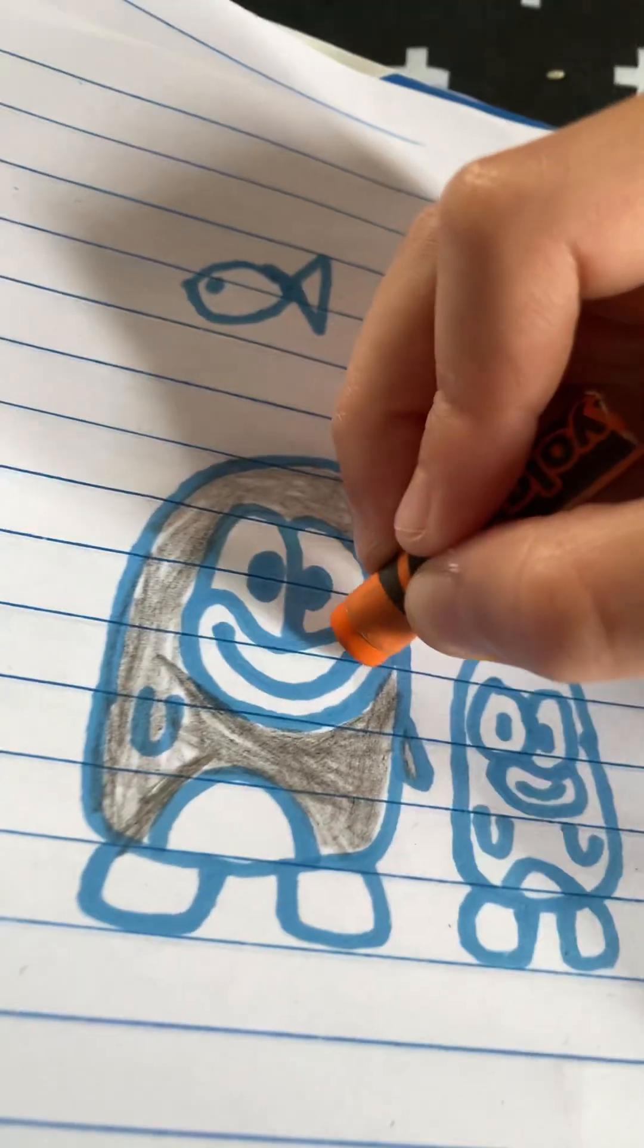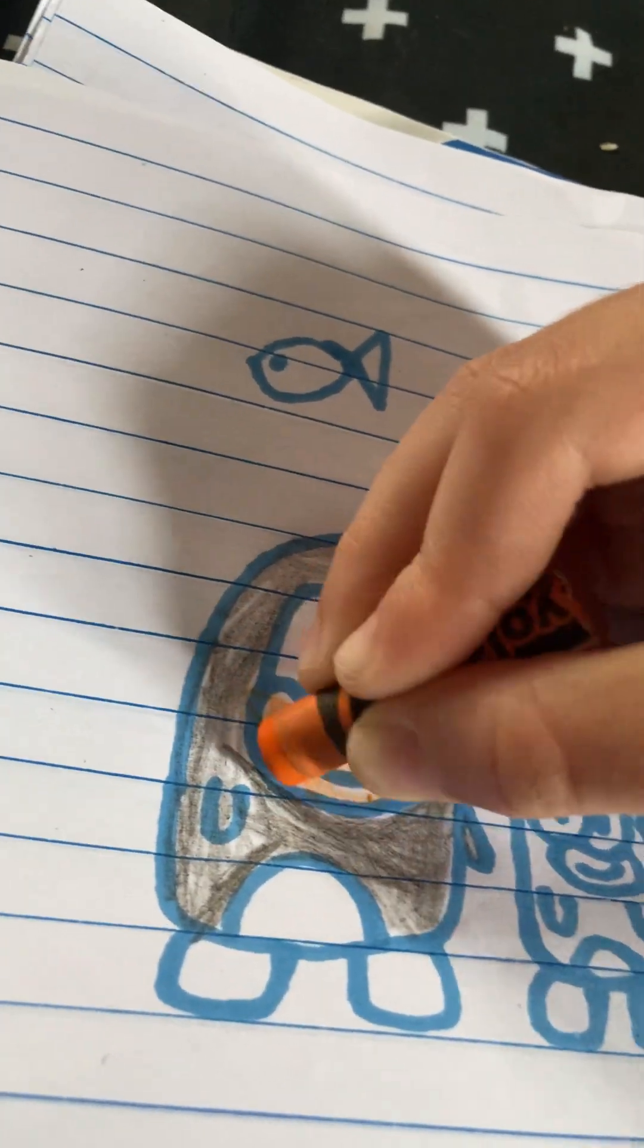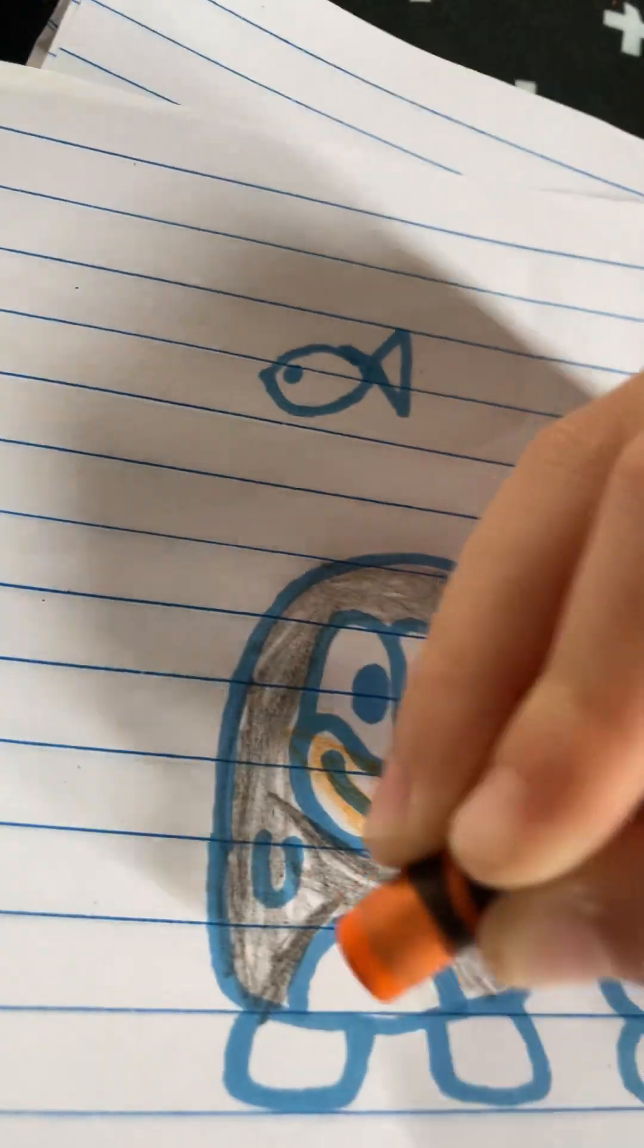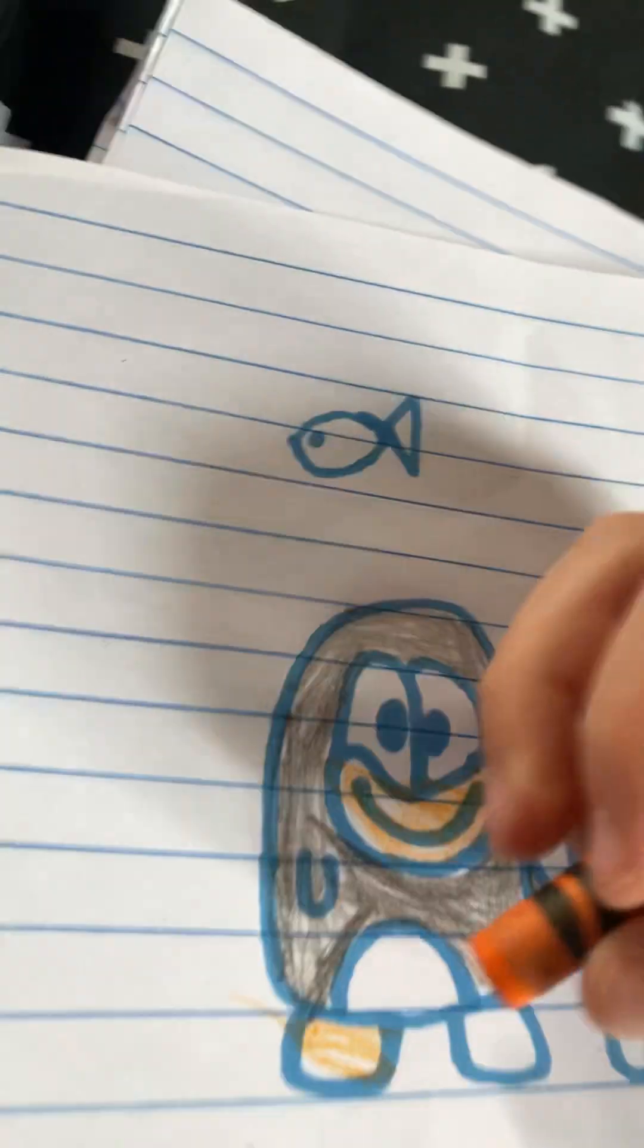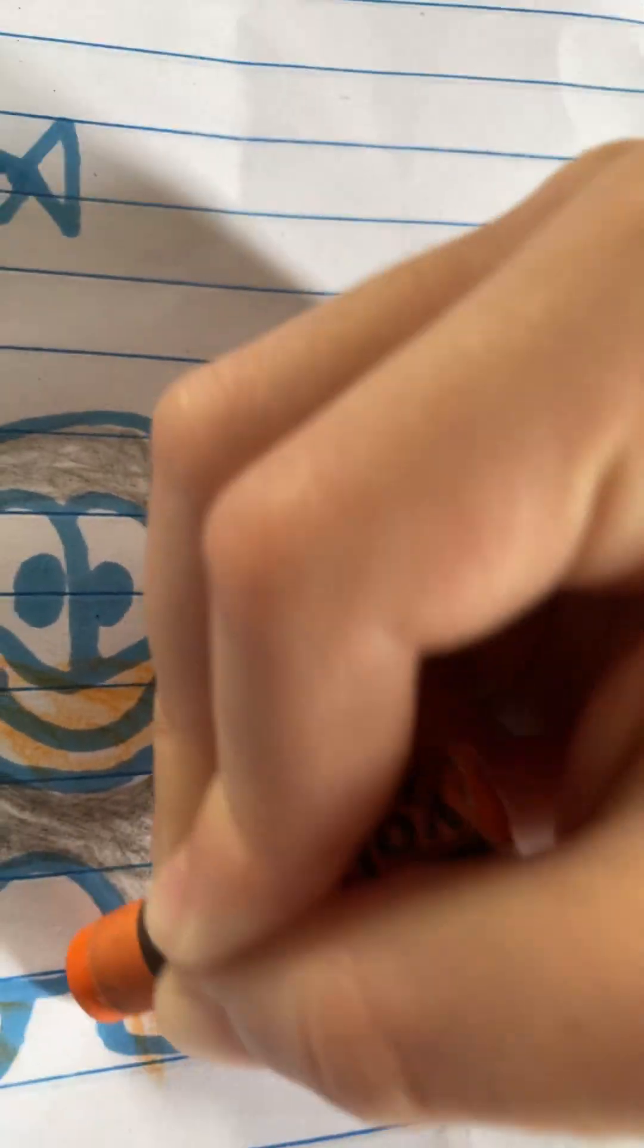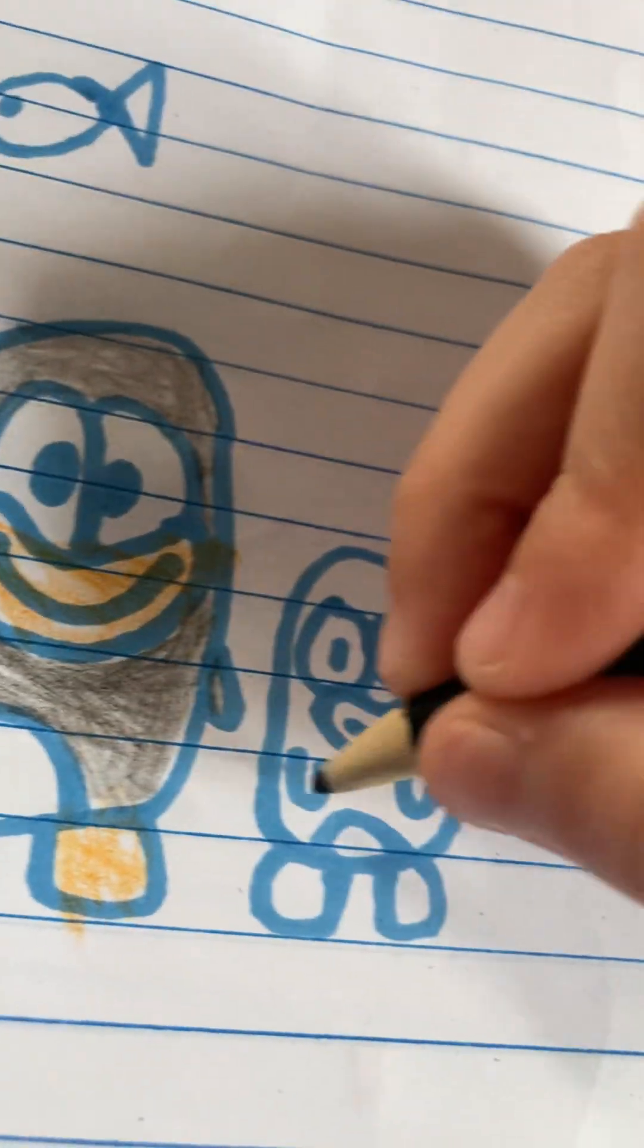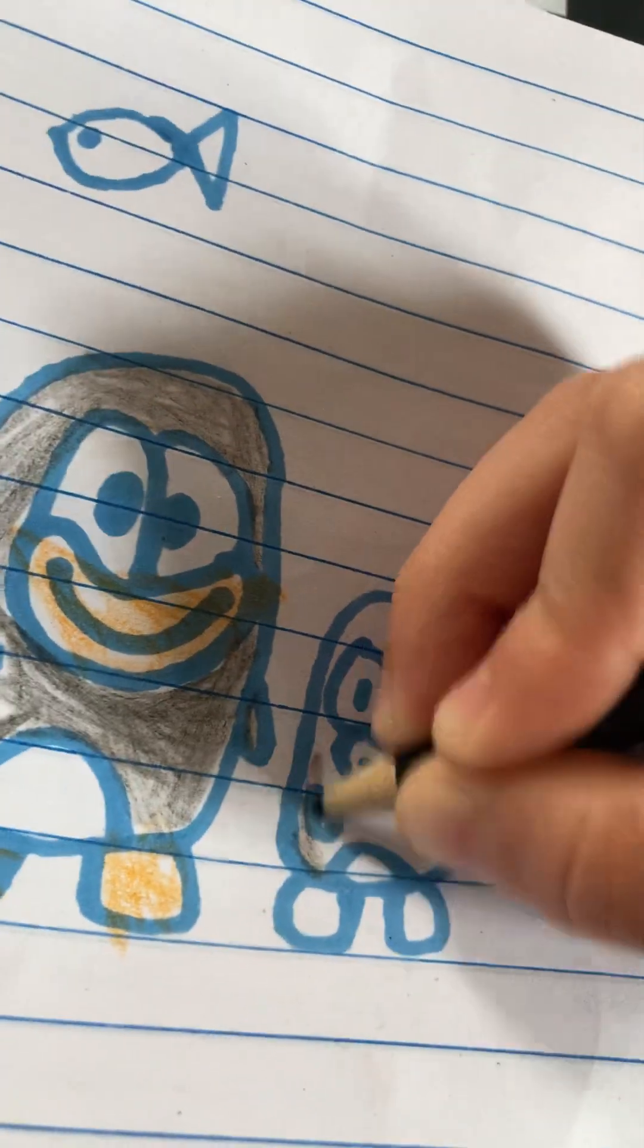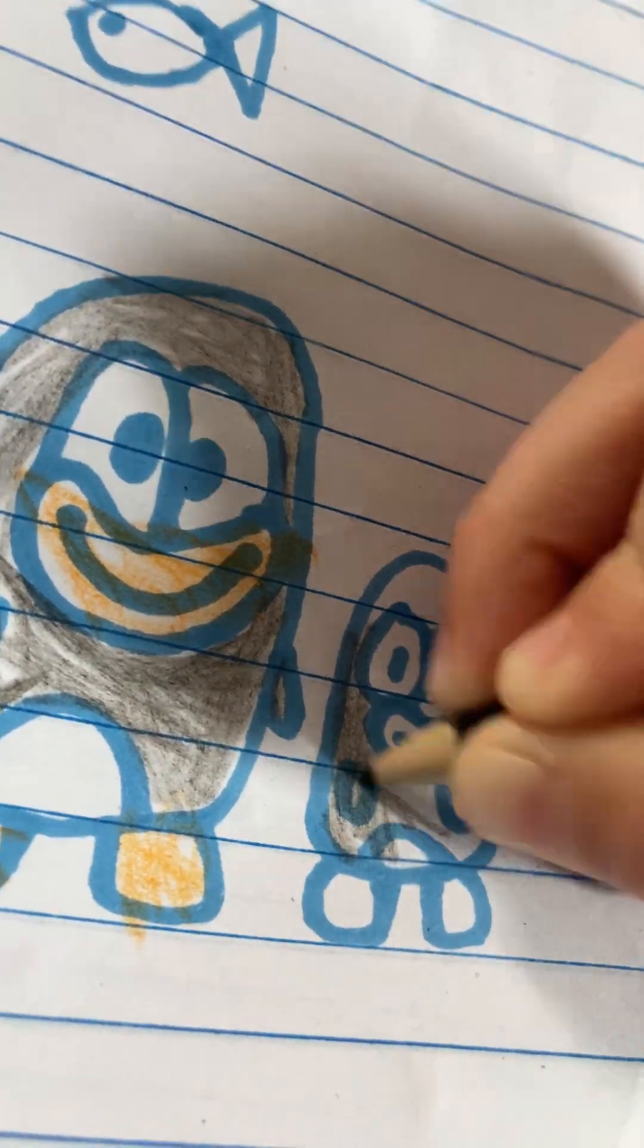Where's the orange? Okay. Start off with the beak, and then the feet. I wonder why Avery doesn't have a tail. Because penguins do have tails. Color that in.